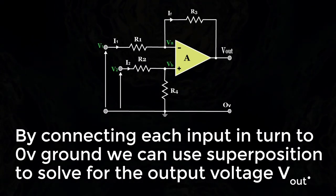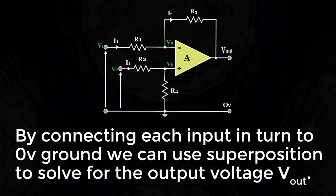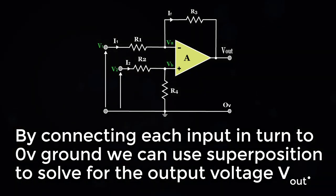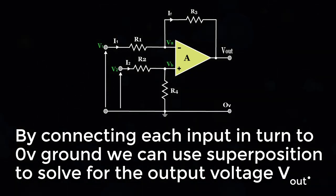By connecting each input in turn to zero volt ground, we can use superposition to solve for the output voltage Vout.